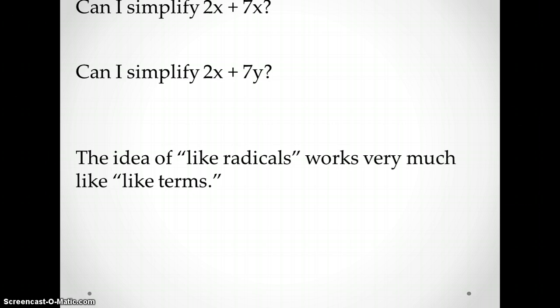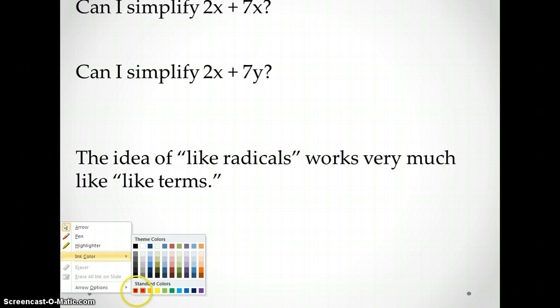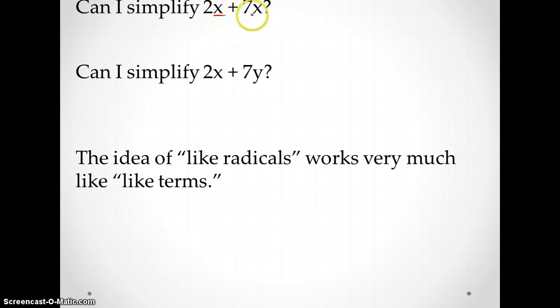Let's think to some basic algebra. And I know the top of this is getting cut off a little bit, but hopefully you can still read it. Can we simplify the expression 2x plus 7x? And the answer would be yes, we can. And the reason that we can is these are both x's. So we can combine them together and get 9x.